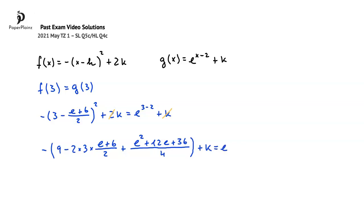Before moving on, we'll multiply 2 times 3 times e plus 6, and since 2 times 3 is 6, we get 6e plus 36. To collect terms inside the brackets, I'll find a common denominator, which is 4.